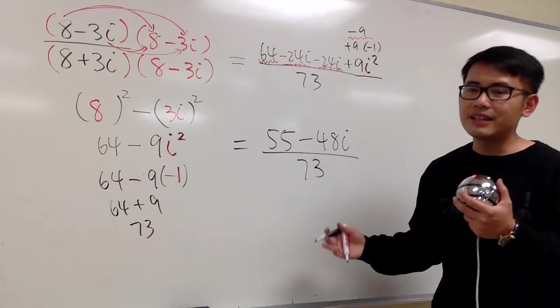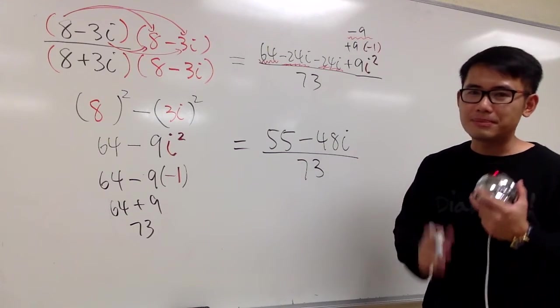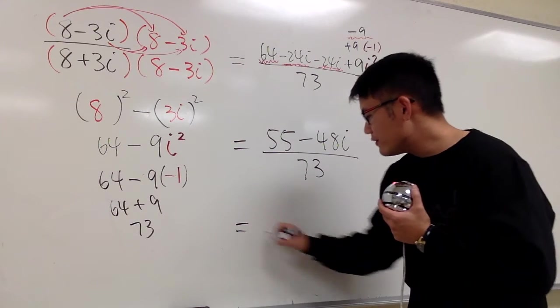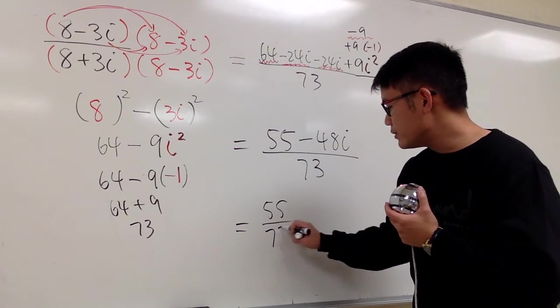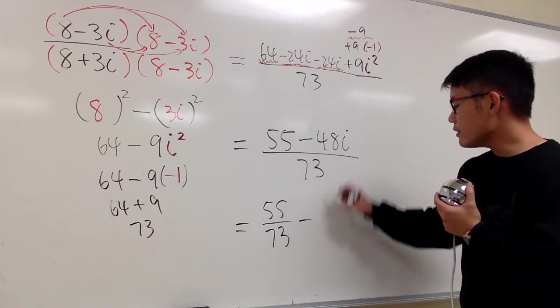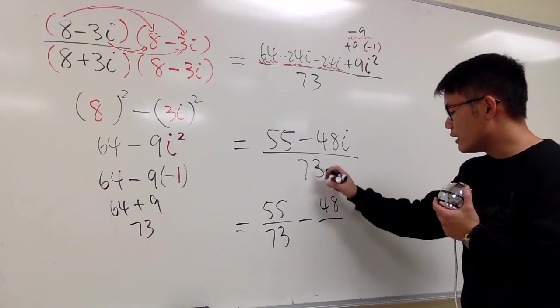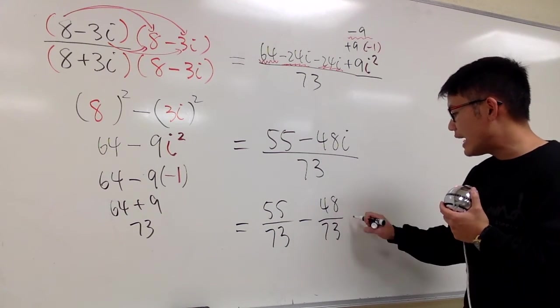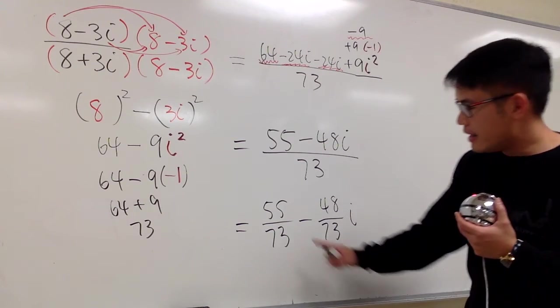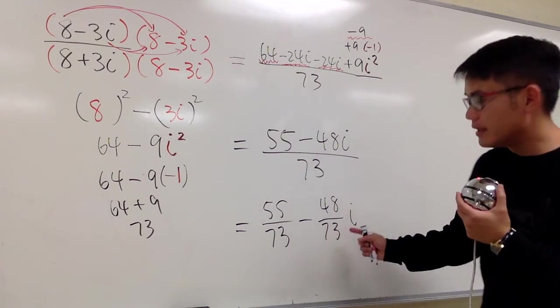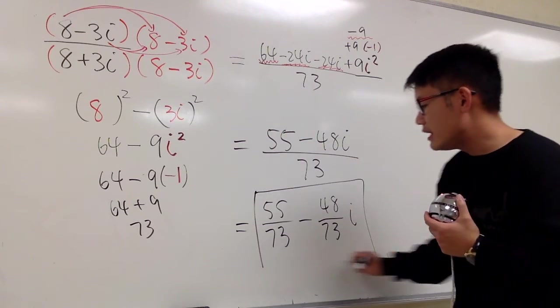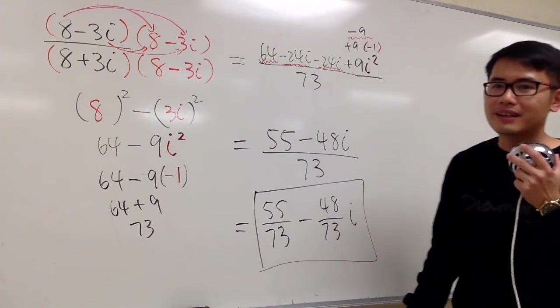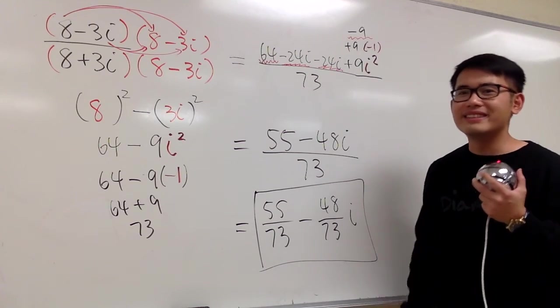But then, as I said, we should write this down as a plus bi form. Finally, we'll write this down as 55 over 73, and then minus 48 over 73. And then we'll put the i on the side. a plus bi form. The b in this case is a negative value, but that's what we said. a plus bi form, the standard form of a complex number. And this right here is it.